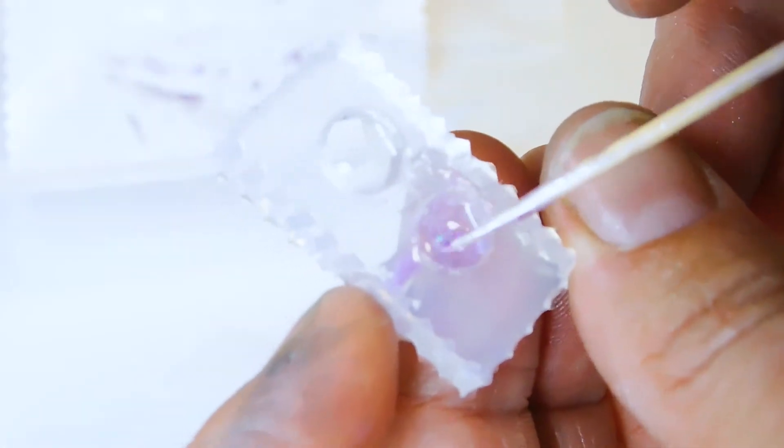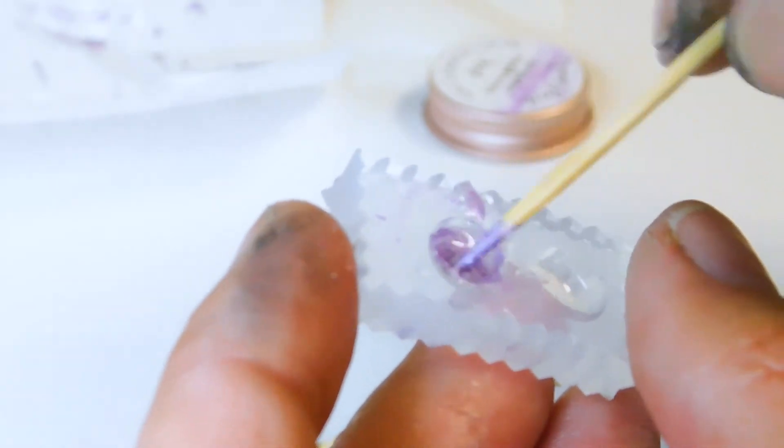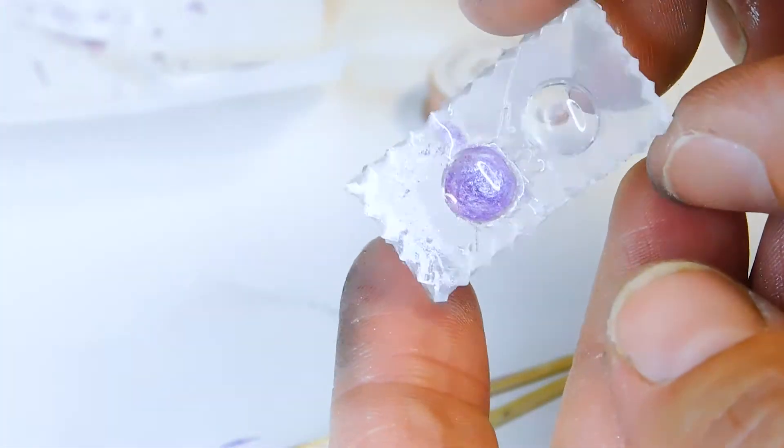Put the stone in the lamp to cure then do a second layer this time with just a little colour mixed in with clear resin then cure again. The next layer should have a little more colour and the final layer should make the stone opaque.